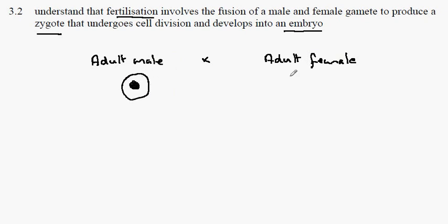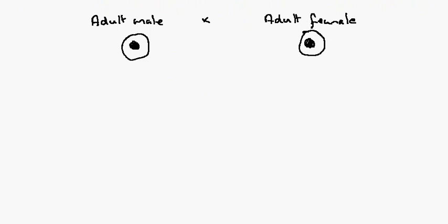This would be a cell in the testes, this would be a cell in the ovary, and these cells have a complete set of chromosomes. This is called being diploid.